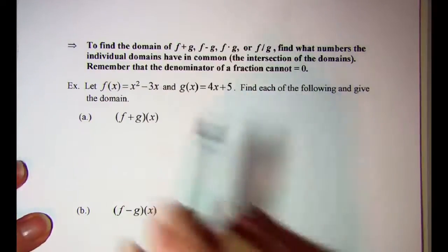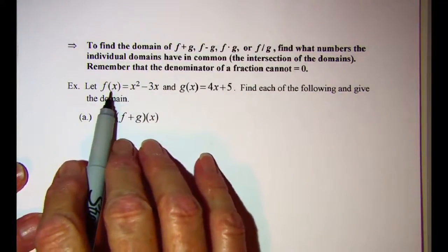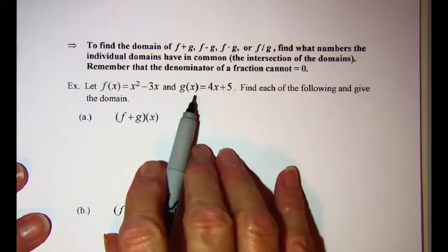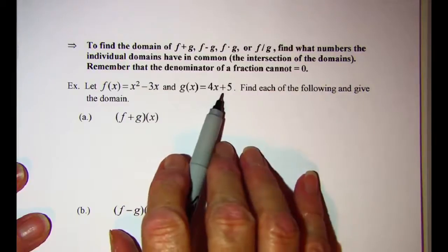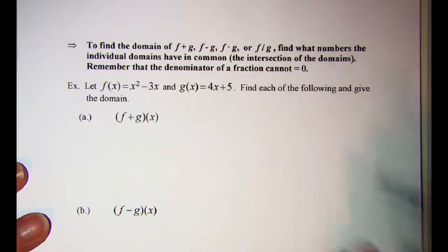So let's try a few. In our example we're going to let f of x equal x squared minus 3x and g of x equal 4x plus 5. And we want to find each of the following and also give the domain.